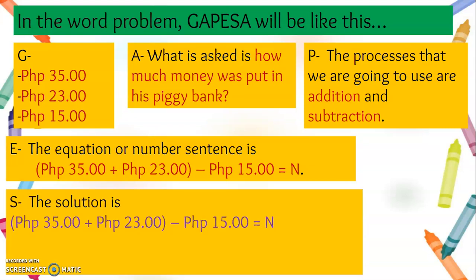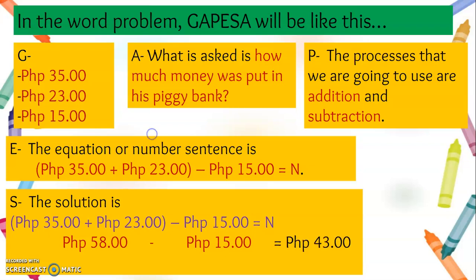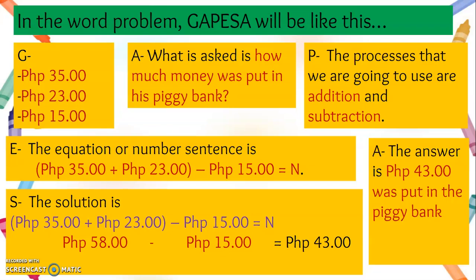The solution is: we need to add 35 pesos plus 23 pesos first, then we can subtract 15 pesos. So 35 plus 23 equals 58 pesos. And now we can subtract 15 pesos. So 58 minus 15 equals 43 pesos. The answer is 43 pesos was put in the piggy bank.